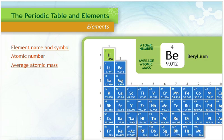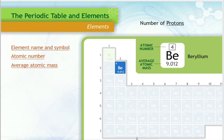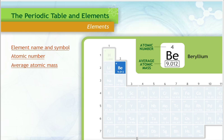Let us look at the element beryllium for an example of the information presented. Two of the items displayed in the box are the element name and symbol. The atomic number is displayed above the element symbol and, as we know from Section 1, is the number of protons the element has. Beryllium has an atomic number of 4, therefore we know it has 4 protons. The atomic mass is listed below the element name and is the average mass of the protons and neutrons.